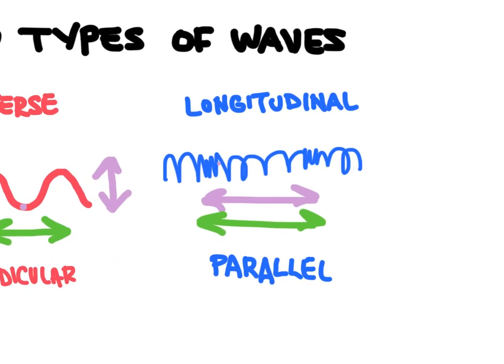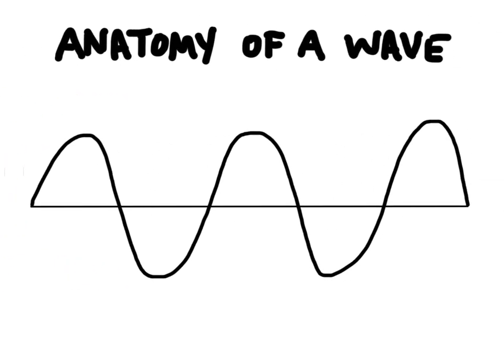So let's focus in on that transverse wave so we can talk a little bit about the anatomy of a wave. So first, the top of a wave we call a crest, and the bottom of a wave we call a trough. And amplitude is going to be the maximum distance from equilibrium. And so the very center of a crest and a trough, this line right here, would be equilibrium position.